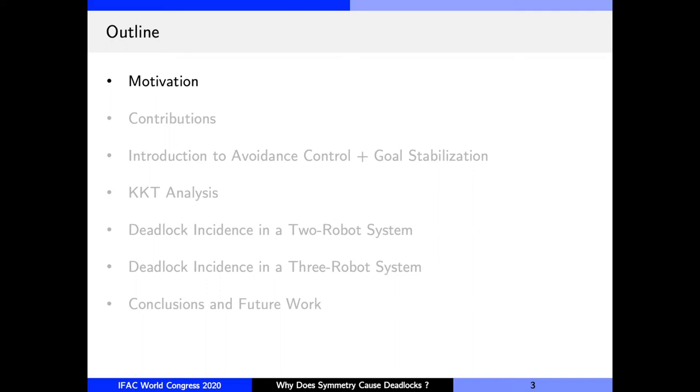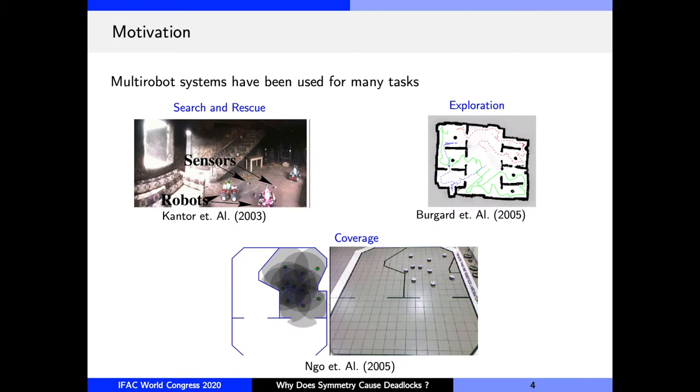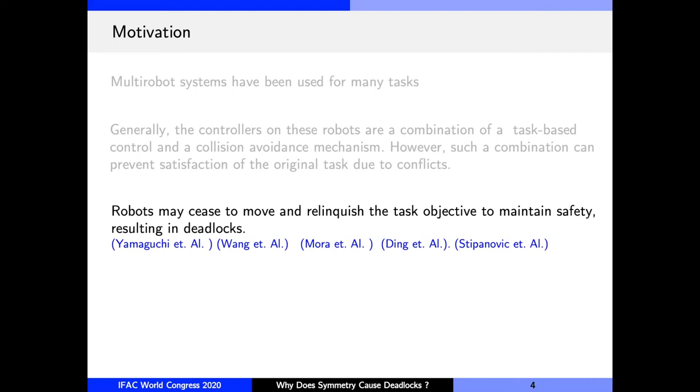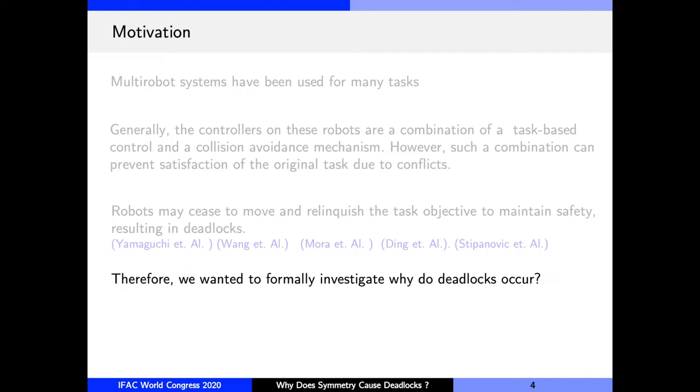So what is the motivation of our work? Multi-robot systems have been used for many tasks such as search and rescue, exploration, and coverage. Generally, the controllers on these robots are a combination of task-based control and a collision avoidance mechanism. But this combination can prevent satisfaction of the original tasks due to constraints. Robots may stop moving to maintain safety resulting in deadlocks, as has been noted in these works. So we wanted to formally investigate why do deadlocks occur, and this paper is an attempt to answer that question.